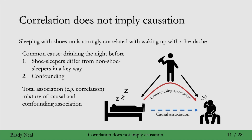Correlation is just one type of association. Association here is just a synonym for statistical dependence. Correlation is technically a measure of linear statistical dependence, but people frequently use it to mean statistical dependence in general. To avoid confusion, we're just going to use the word association rather than correlation. If you were to measure correlation, or any measure of association, you would be looking at a mixture of causal and confounding association.